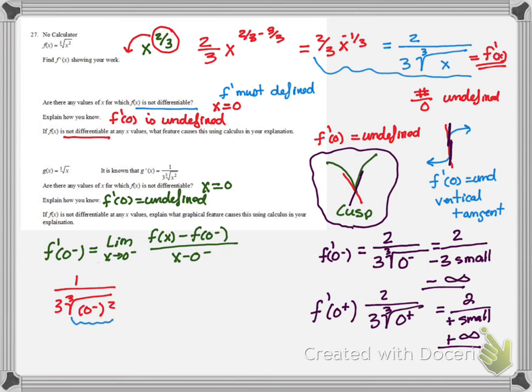When we take that 0 from the minus side and we square it, it turns into a positive. And then when we take its cube root, it's still very small but positive. So we're looking at 1 over 3 times a positive small number. That's infinity.